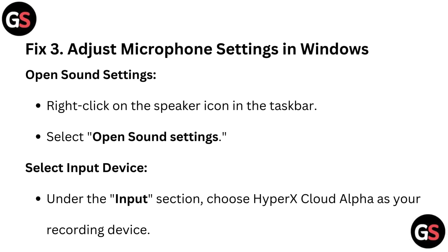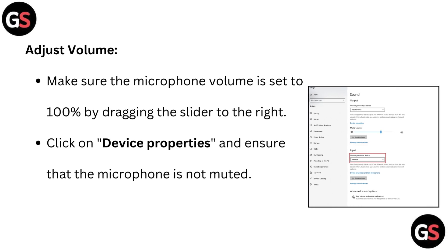Fix 3: Adjust microphone settings in Windows. Open Sound settings by right-clicking on the speaker icon in the taskbar and selecting Open Sound Settings. Under the Input section, choose HyperX Cloud Alpha as your recording device. Make sure the microphone volume is set to 100% by dragging the slider to the right. Click on Device Properties and ensure that the microphone is not muted.